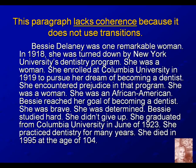Topic sentence first: Bessie Delaney was one remarkable woman. Now show me what was so remarkable about her. In 1918, she was turned down by NYU's dentistry program. She was a woman. She enrolled at Columbia University in 1919 to pursue her dream of becoming a dentist. She encountered prejudice in that program. She was a woman. She was an African American. Bessie reached her goal of becoming a dentist. She was brave. She was determined. Bessie studied hard. She didn't give up. She graduated from Columbia University in June of 1923. She practiced dentistry for many years. She died in 1995 at the age of 104.